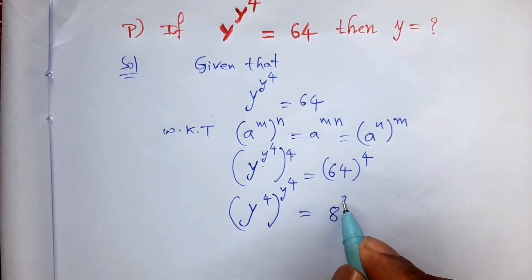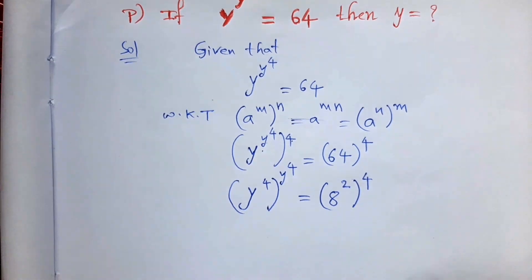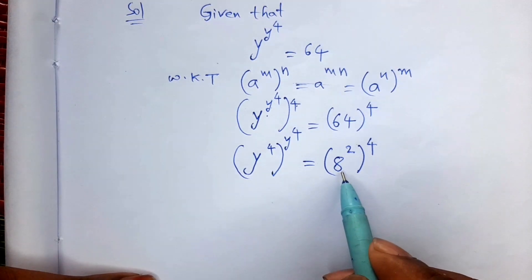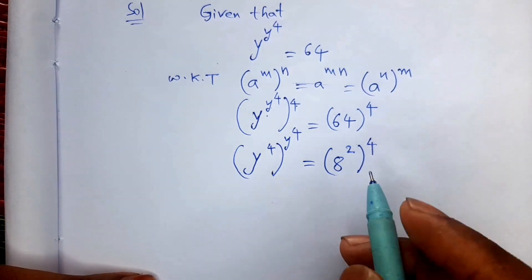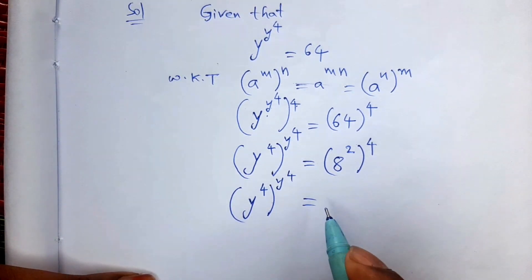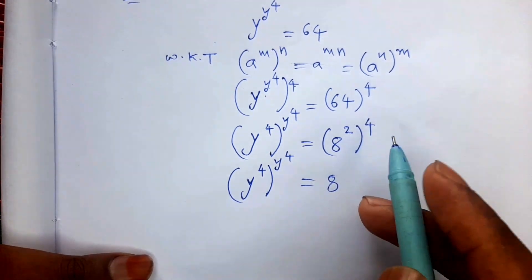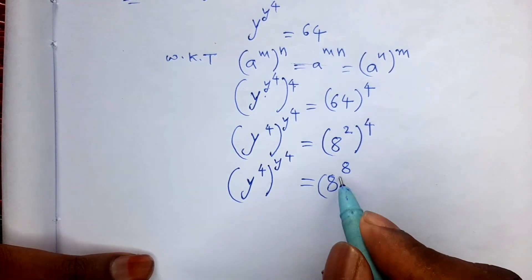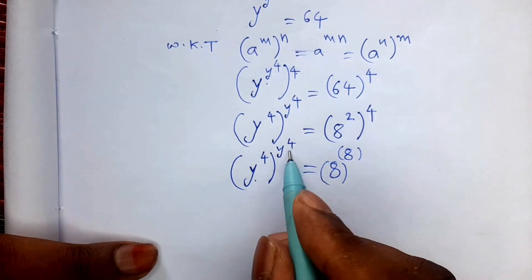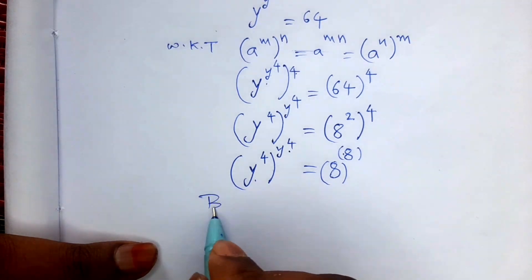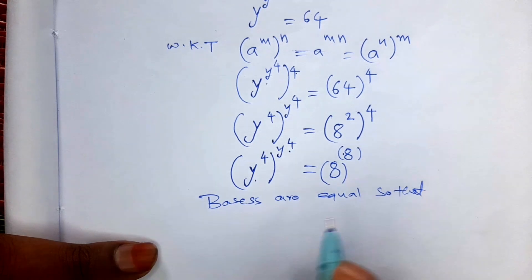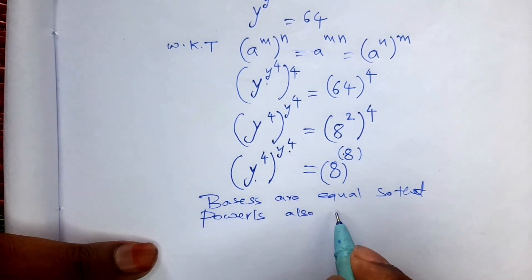64 to the power 4 can be written as 8 squared, all to the power 4, which gives 8 to the power 8. So we have y to the power 4, all to the power y to the power 4, is equal to 8 to the power 8. Observe that the base and power are the same on both sides, so since the bases are equal, the powers are also equal: y to the power 4 equals 8.